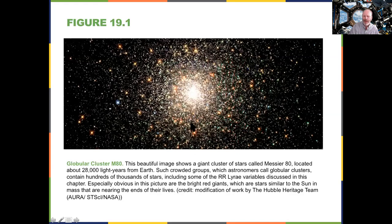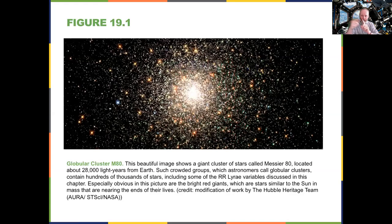These are the oldest parts of our galaxy. As you can see, this one is about 28,000 light years away from Earth, meaning the light we're seeing originated roughly 28,000 years ago. That number is interesting because that's also about how far away we are from the center of the galaxy. The globular cluster could be 28,000 light years in any direction around our galaxy.